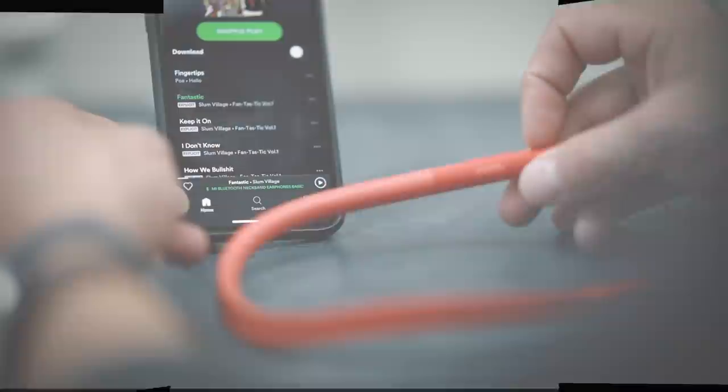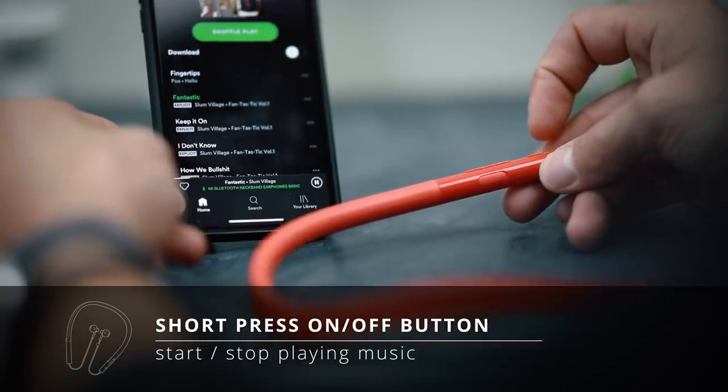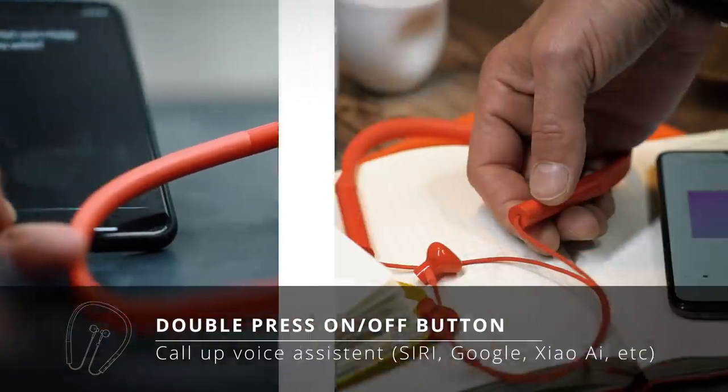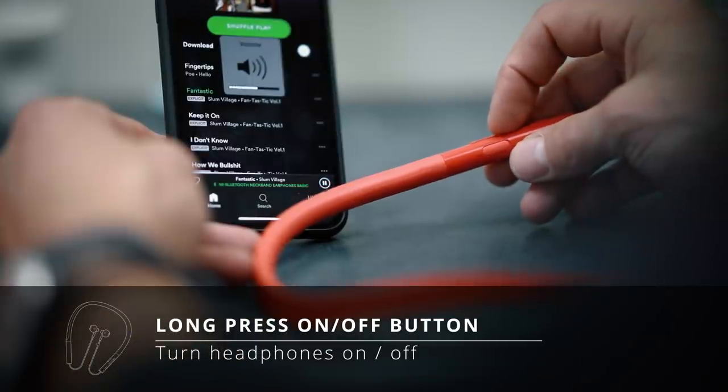Once they are connected you can use the on-off button to start and stop the music by short pressing once, and by double pressing that on-off button you can call up your voice assistant like Siri on iPhone or Google assistant on an Android phone. Long pressing the on-off button will turn them off.